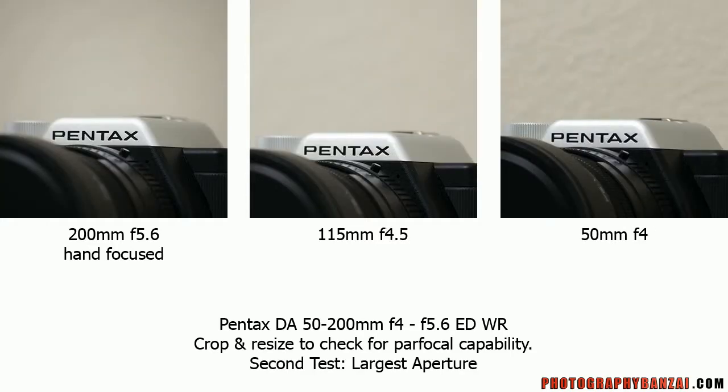Here's the last test with different apertures for the 50 to 200 millimeter lens. It's pretty difficult to tell — they look very similar. However, the 115 millimeter is slightly front focused, and I think the 50 millimeter is probably as well compared to the 200 millimeter test.